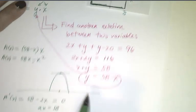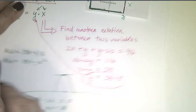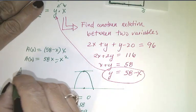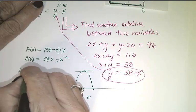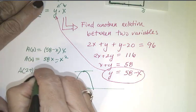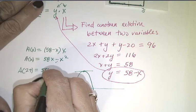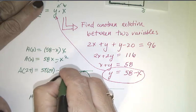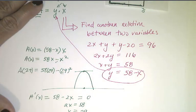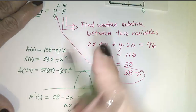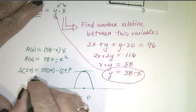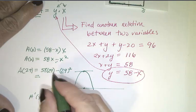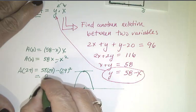So, in order to find the area, I've got to go back to my area function and say, well, what is A of 29? Well, it's equal to 58 times 29 minus 29 squared. Okay? And if I work this out, which I'm going to do really fast in my head, and I get 841.